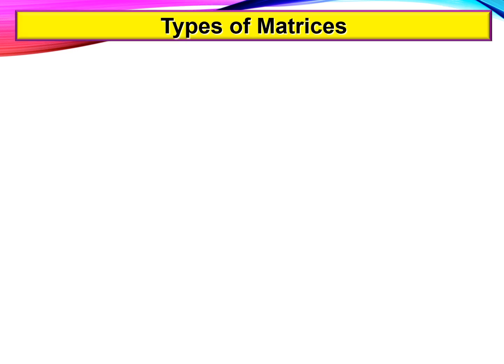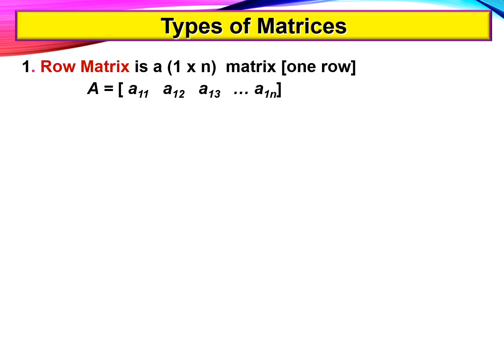Types of matrices. Number one, a row matrix is a matrix which has only one row. For example, matrix A: 1, 2, and matrix B: 1, 0, 7, 8.